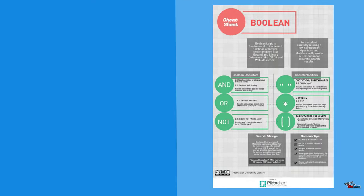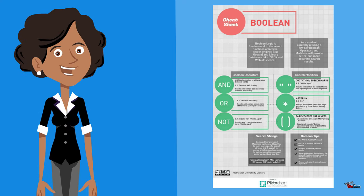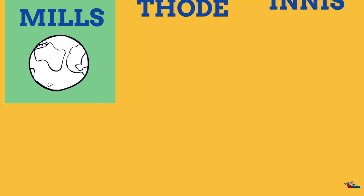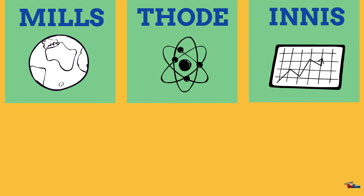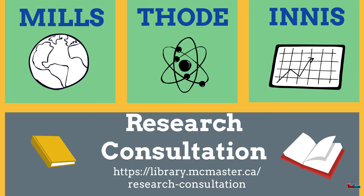Remember to consult McMaster Library's Boolean cheat sheet if you need any further clarification or just a simple refresher. If you have any questions, librarians are here to help. Visit us in any of our libraries on campus or book a research consultation for one-on-one assistance.